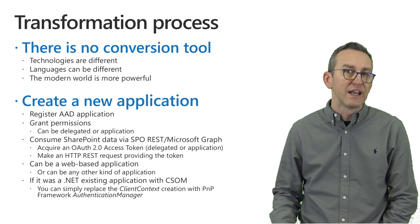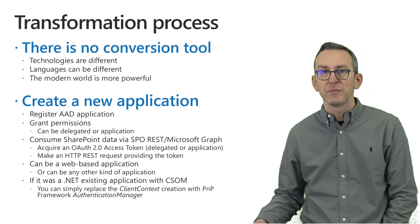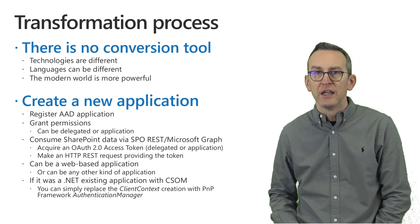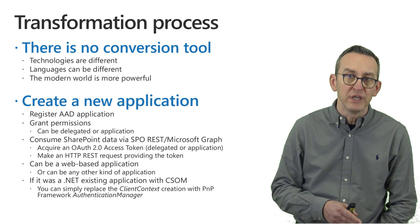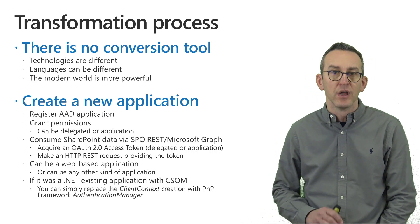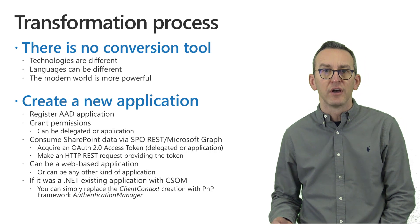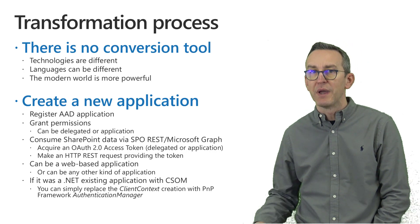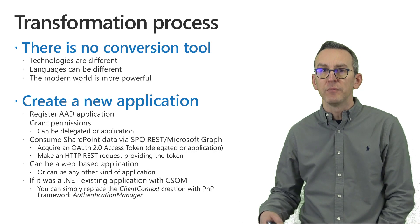Then you will need to get an access token from Azure Active Directory in order to securely consume the SharePoint REST APIs, CSOM, or Microsoft Graph from within your custom solution. If you are upgrading an existing .NET solution that used to be a provider-hosted app and you want to make it an Azure Active Directory registered application, you can simply replace the logic used to get a client context — for example using the PnP Framework authentication manager class — and then all the remaining part of your code can still be the same as before.